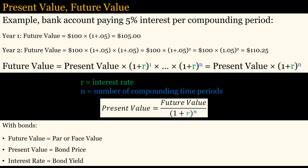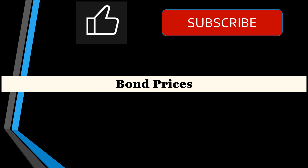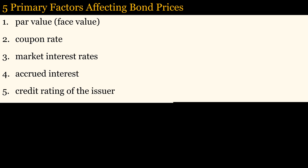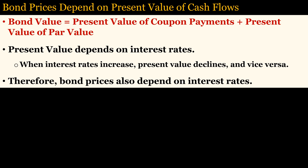With bonds, future value equals the par value that will be received when the bond matures. The present value equals the bond price. The interest rate equals the bond yield. These are the five primary factors affecting bond prices. The main factors are interest rates and the credit rating of the issuer. The value of the bond equals the present value of coupon payments plus the present value of the face value. Present value depends on interest rates; therefore, bond prices also depend on interest rates.